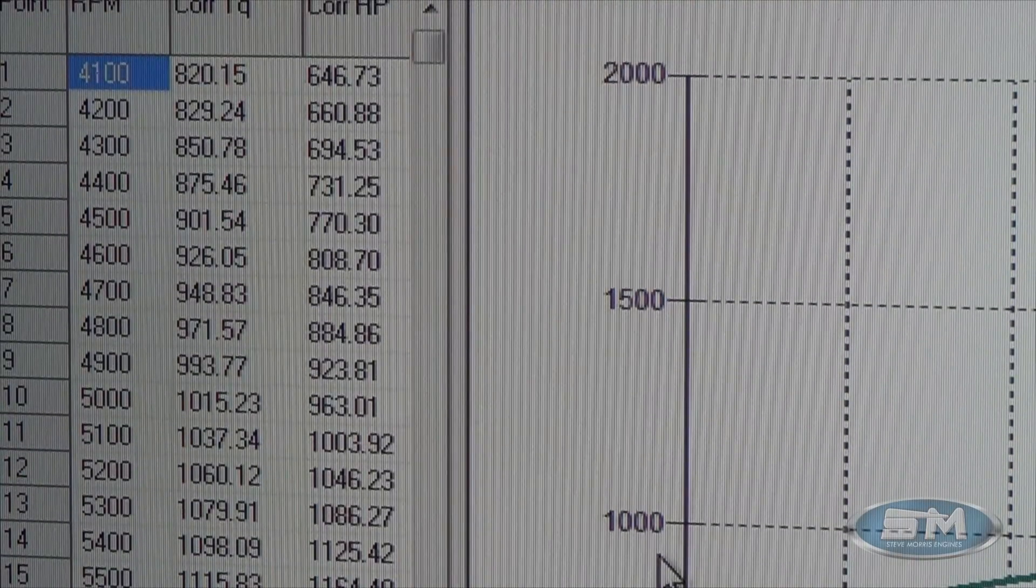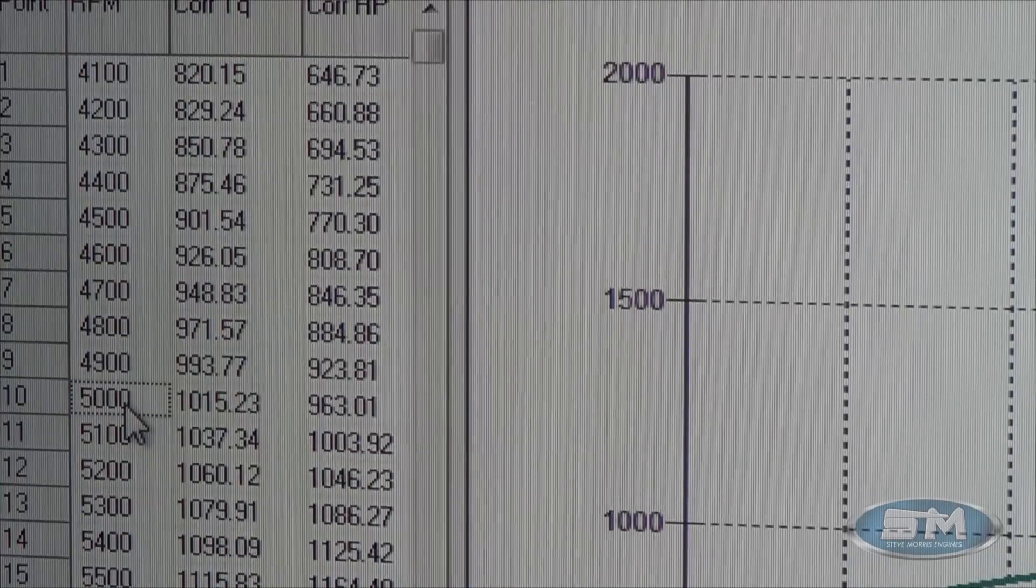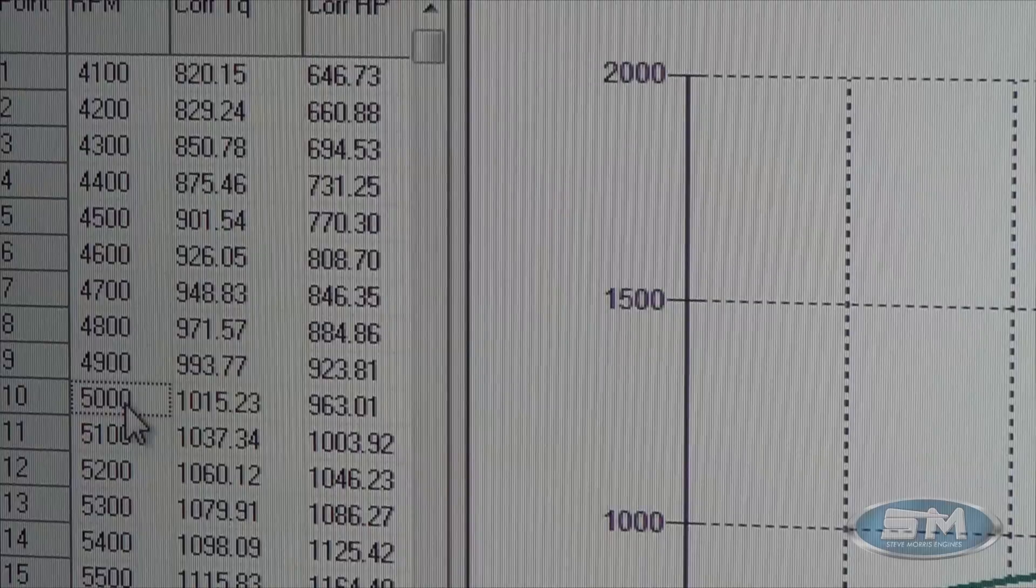And if we scroll on down we'll go straight to 5,000. Look right there, you can see we have 1,015 foot-pounds of torque and 963 horsepower.